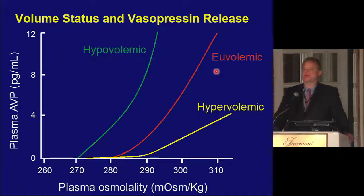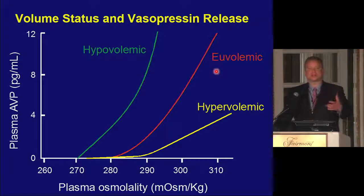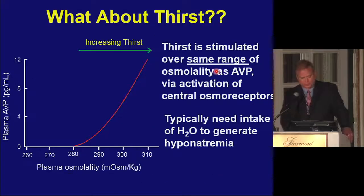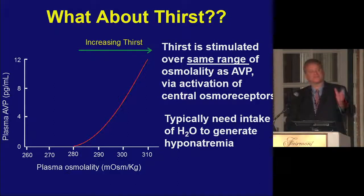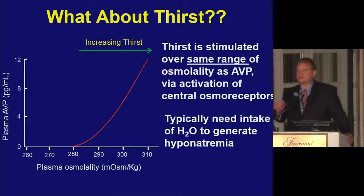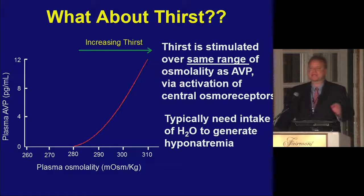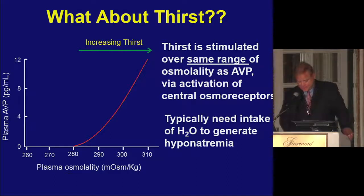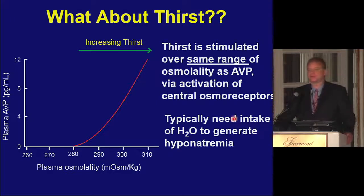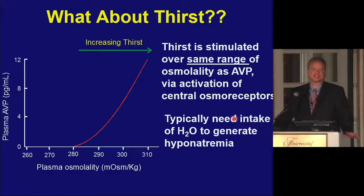This is a really key take-home point in hyponatremia: the physiology is rarely static once we start doing things to patients. The typical hypovolemic hyponatremic patient, when we start giving them saline, will have vasopressin shut off with consequences in how they respond. Thirst: if you do very careful grading as osmolality increases, the response curve is actually identical to vasopressin. Many of the same osmoreceptive neurons that play a role in vasopressin secretion also play a role in thirst. To generate hyponatremia, you typically need intake of free water — so there must also be some abnormality of thirst in many patients with SIADH.